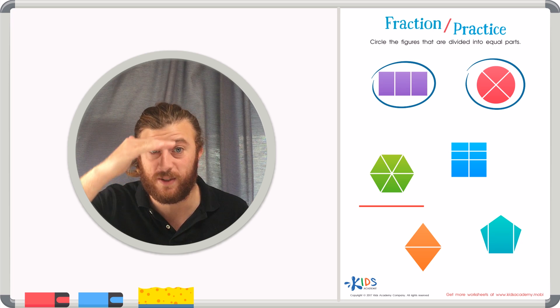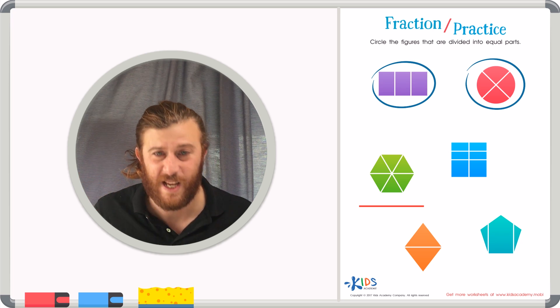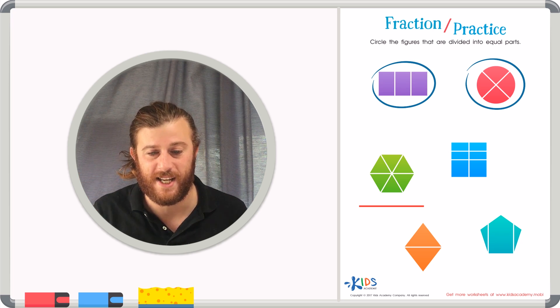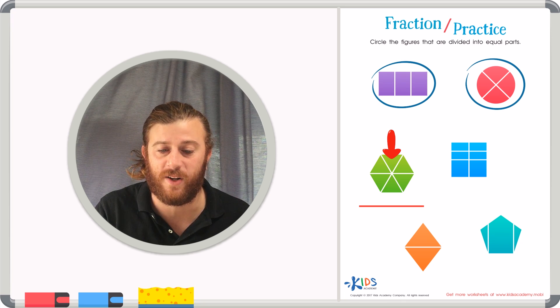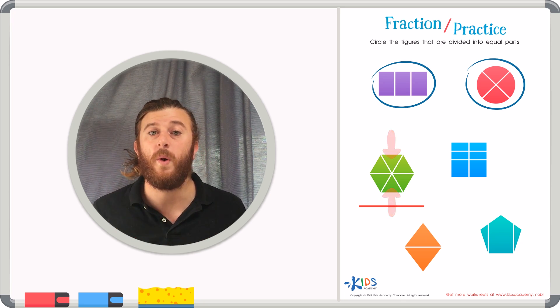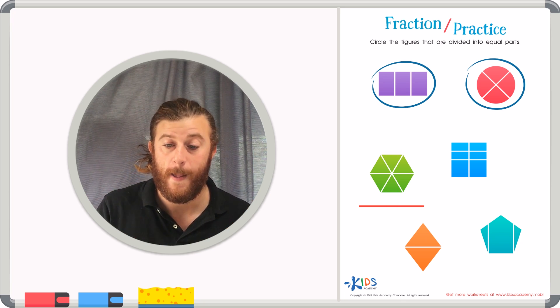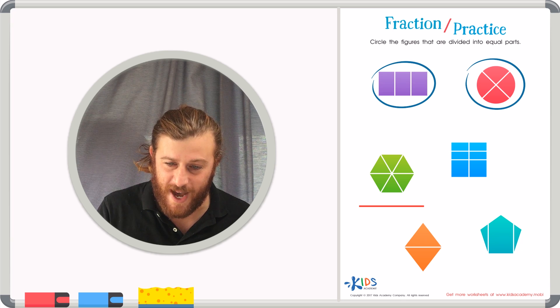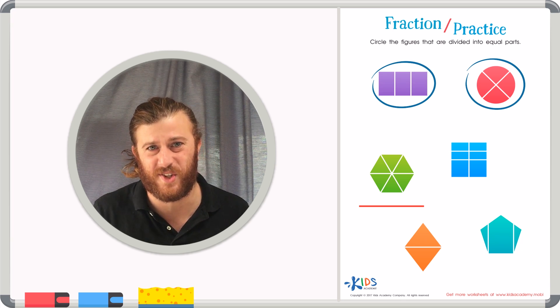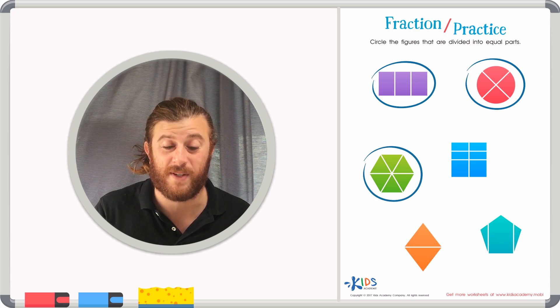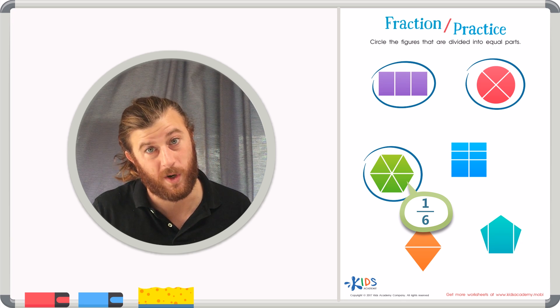Let's take a close look. They all look to be about the same size. And I bet if I flipped the triangles on top of one another, we could see that they fit perfectly, meaning that this shape is divided into equal parts. Let's go ahead and circle the hexagon that is broken up into six equal pieces, or sixths.